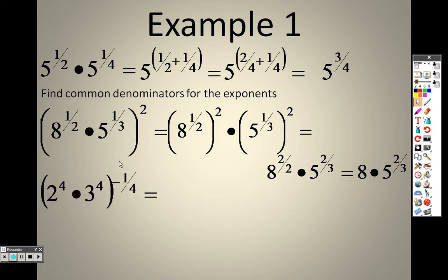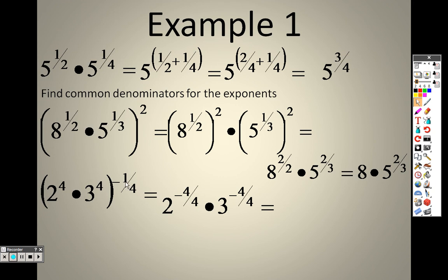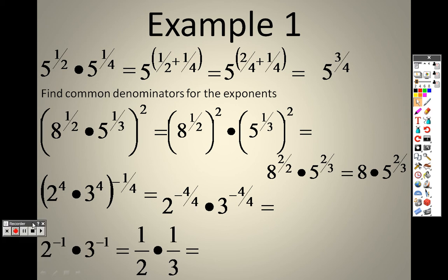Over here it's the same — I just distribute the exponent through to both items. That gives me 2 to the negative four-fourths and 3 to the negative four-fourths, because 4 times negative one-fourth is negative four-fourths. Negative four-fourths simplifies to negative 1, so I have 2 to the negative 1 and 3 to the negative 1. 2 to the negative 1 is one-half, and 3 to the negative 1 is one-third. Multiplying: 1 times 1 is 1, and 2 times 3 is 6, so the answer is one-sixth.